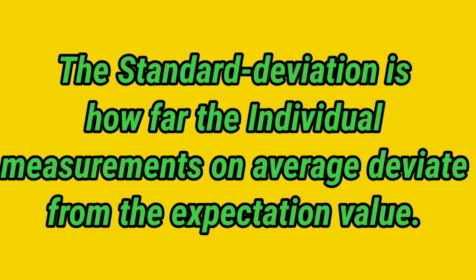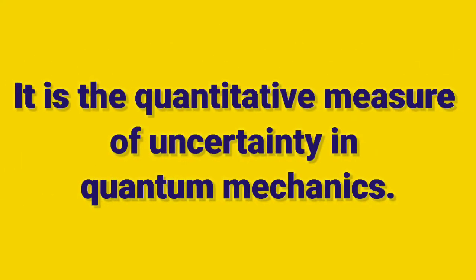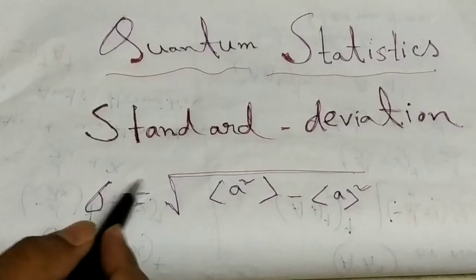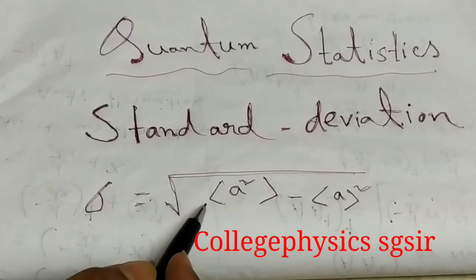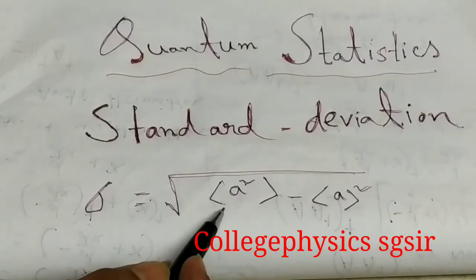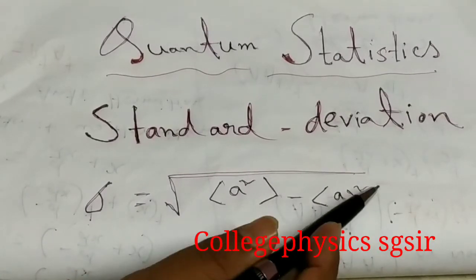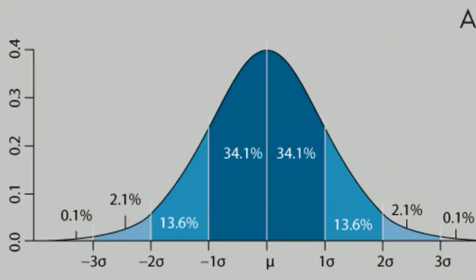The standard deviation is how far the individual measurements on average deviate from the expectation value. It is the quantitative measure of uncertainty in quantum mechanics, and the formula shows sigma is equal to the square root of the average of A-squared minus the square of the average of A. That is the simplest version.